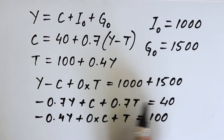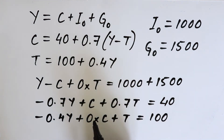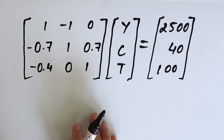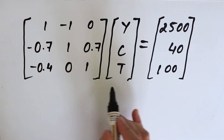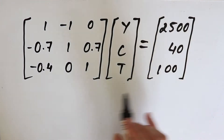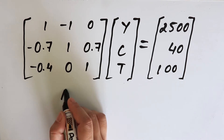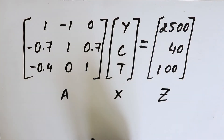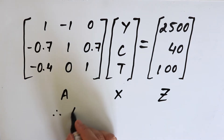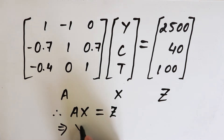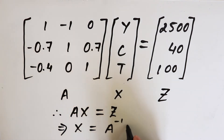We then express these equations in matrix form. We write the coefficient matrix, then the variable matrix, and then the constant matrix. In matrix form, this is the coefficient matrix, this is the vector of the variables, and this is the column vector of the constants. We name the coefficient matrix A, the variable matrix X, and the constant matrix Z. We have AX equals Z, or X equals A inverse Z.